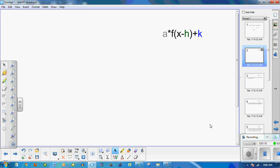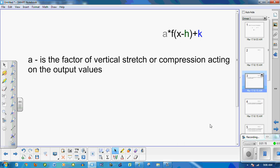A is the factor of vertical stretch or compression acting on the output values. It's operations multiplication, so that word factor comes into play when we talk about the vertical stretch or compression. Also, you want to note that you'll get a reflection when a is negative.